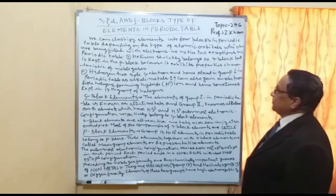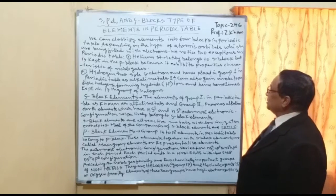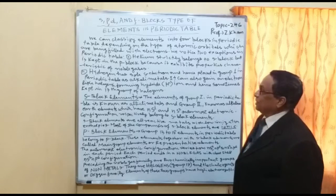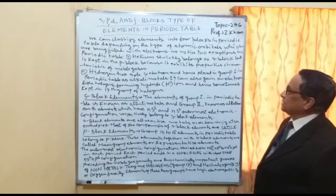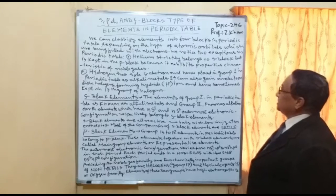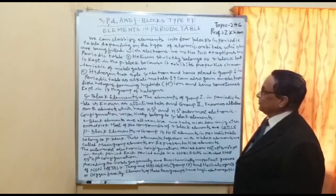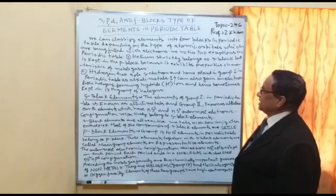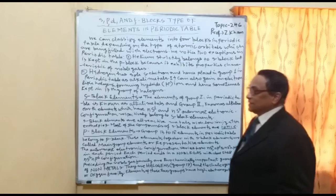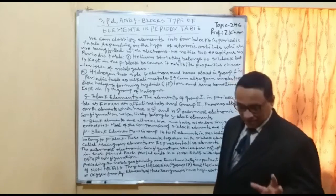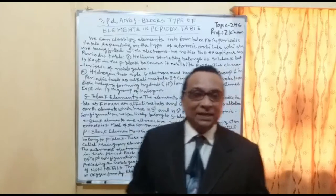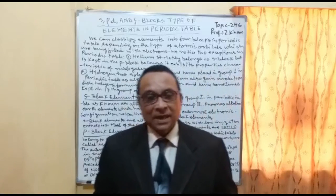We can classify elements into four blocks in the periodic table, depending on the type of atomic orbitals which are being filled with electrons. We notice two exceptions in the periodic table — these two exceptions are helium and hydrogen.